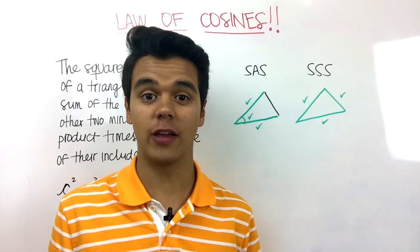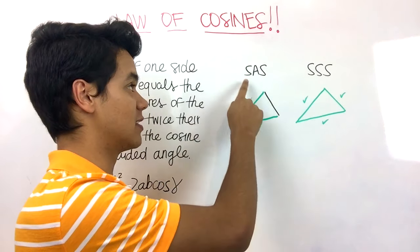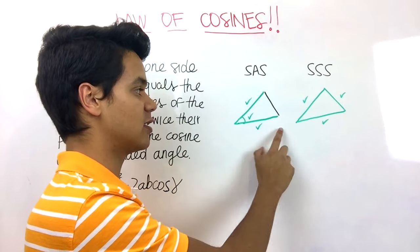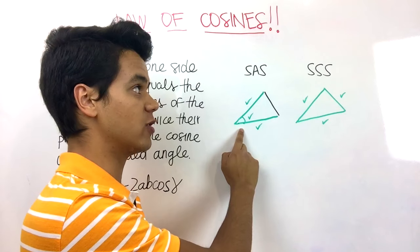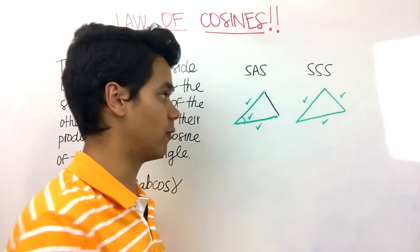We can use the cosine law to solve these two types of triangles. This one is a side-angle-side, so we know two sides of the triangle and the angle in between them, and we can use it to solve for this side.